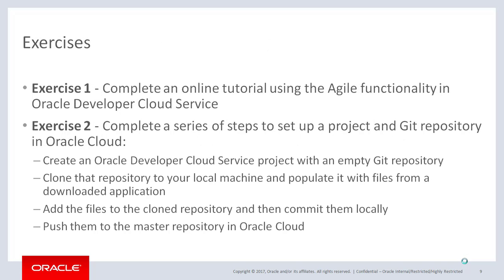You'll perform two exercises this week. In exercise one, you'll complete an online tutorial using the Agile functionality in Oracle Developer Cloud Service. In exercise two, you'll complete a series of steps to set up a project in a Git repository in Oracle Cloud. You'll create an Oracle Developer Cloud Service project with an empty Git repository, clone that repository to your local machine, populate it with files from a downloaded application, add the files to the cloned repository and commit them locally, and finally push them to the master repository in Oracle Cloud and use the web UI to verify the files are there.